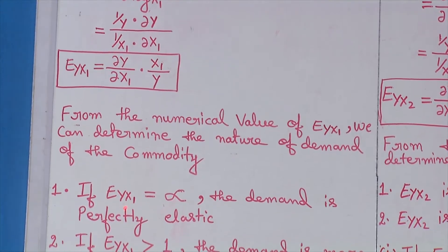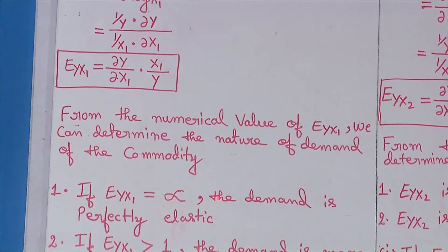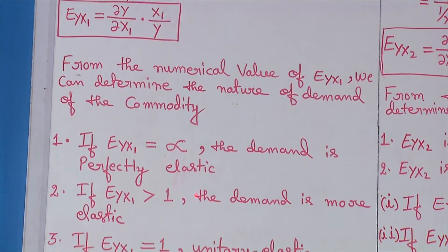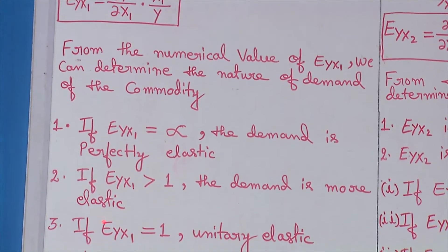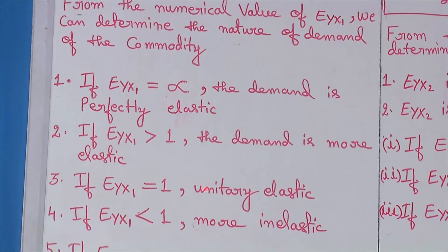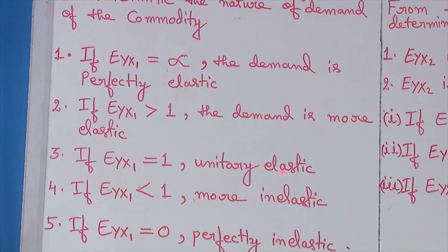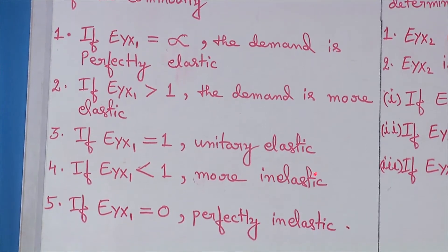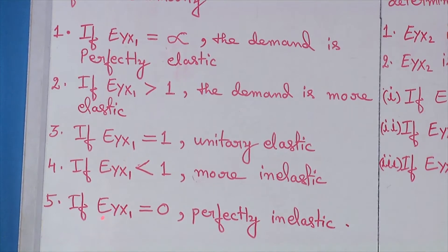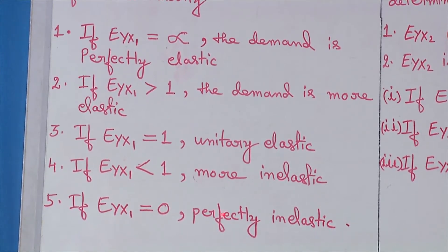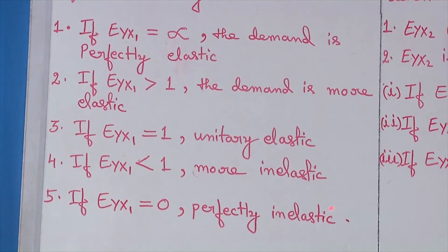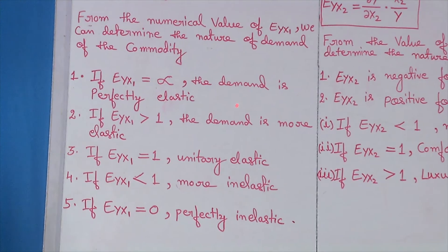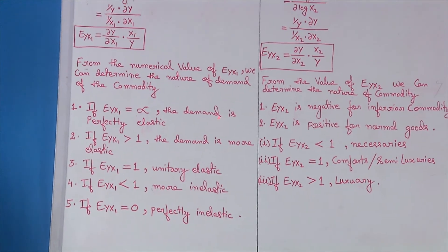If the price elasticity of demand is equal to infinity, the demand is perfectly elastic. If it is greater than 1, the demand is more elastic. If it is equal to 1, there will be unitary elasticity. If E_YX1 is less than 1, there is more inelastic demand for the commodity. If the price elasticity of demand is equal to 0, there will be perfectly inelastic demand. With the numerical value of the price elasticity of demand, we can determine the nature of demand of the commodity.